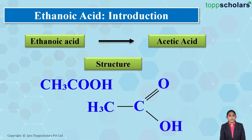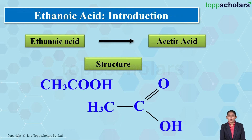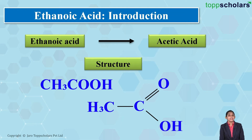Ethanoic acid is commonly known as acetic acid. The molecular formula of ethanoic acid is CH3COOH. Here you can see the structure of ethanoic acid — CH3 single bond COOH — which means that ethanoic acid has the functional group carboxylic acid, that is COOH.